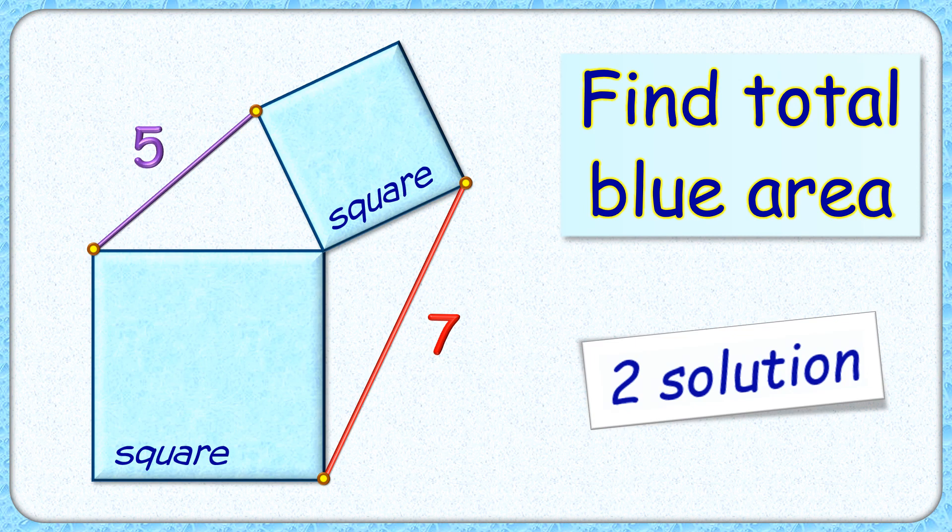Welcome everyone to this interesting question. We're given two blue squares sharing a common vertex. The distance between the two sets of other vertices is 5 and 7 centimeters. The exciting part is that with this limited data, we have to find the total area of these two blue squares.